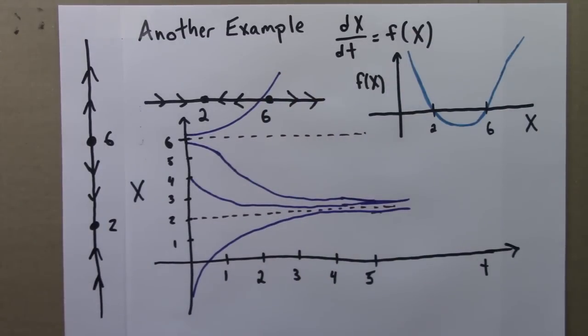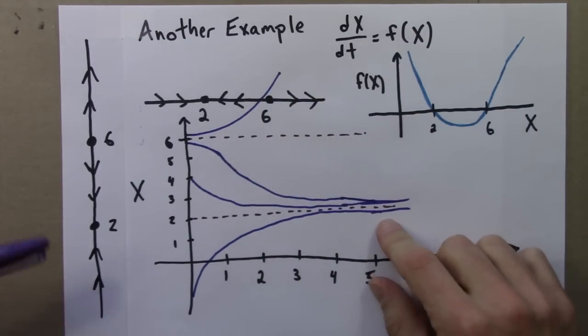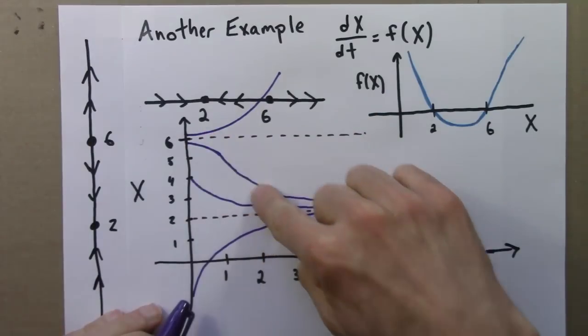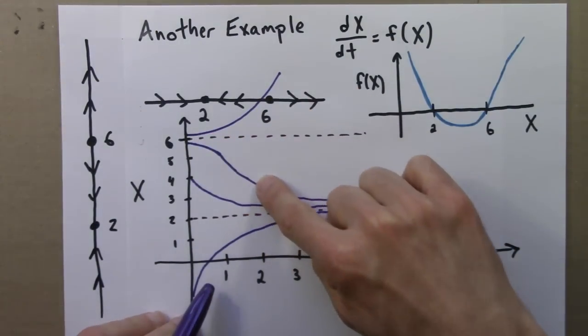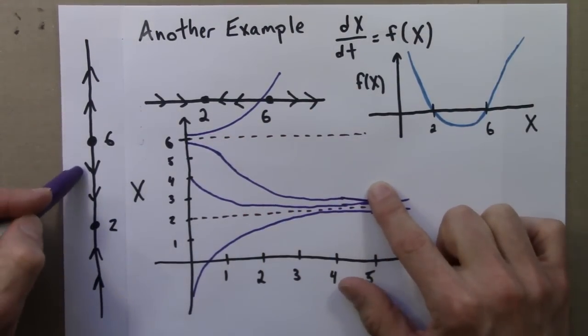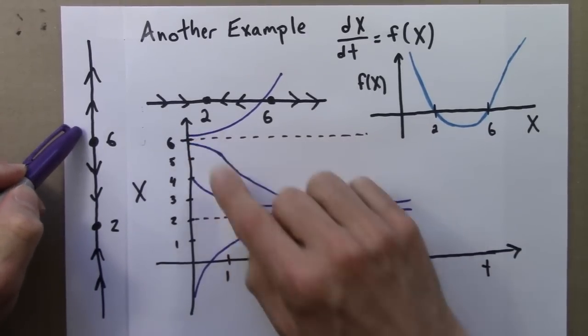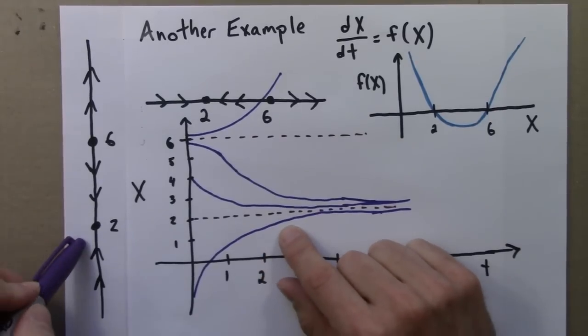If you put the phase line on its side, it tells you the direction that these purple solution curves are going. Here the purple solution curves are going down towards 2. Here they're going up away from 6. Here they're going up towards 2.